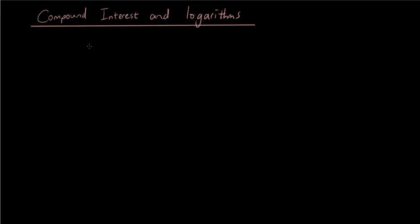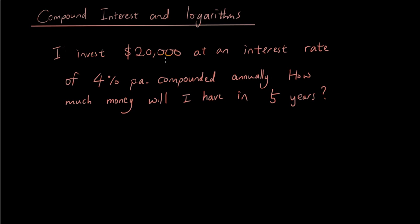Hey guys, it's Eddie the Magic Monk. One of my subscribers asked me to do a compound interest and logarithms video, so let's firstly talk about what compound interest is. Let's recap: if you invest $20,000 in the bank and you get an interest of 4%, that 4% of $20,000 will be added on, compounded annually. So what that means is the first year I add on 4% of $20,000.